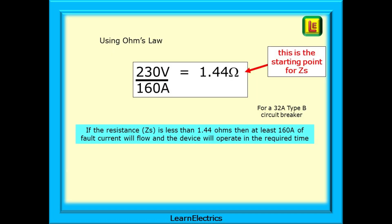Using Ohm's law we can calculate what value of circuit resistance will allow 160 amps to flow. We always use 230 volts, the nominal voltage, for our calculations. 230 volts divided by 160 amps gives us 1.44 ohms. We now know that if a resistance or ZS is less than 1.44 ohms then at least 160 amps of fault current will flow and the 32 amp type B breaker will operate in the required time.